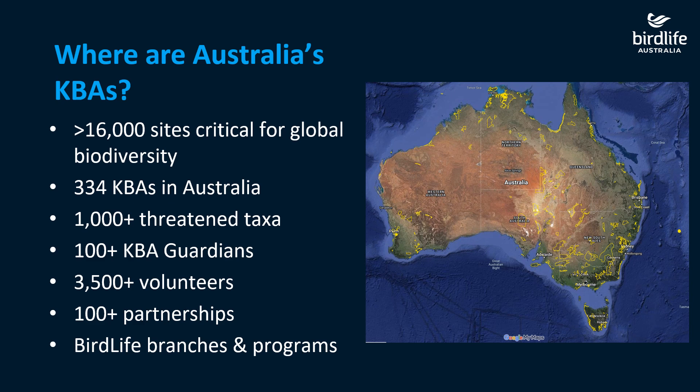The KBAs have had over 1,000 threatened taxa recorded across these 334 sites. We've got over 100 KBA guardians and over three and a half thousand volunteers. We also partner with various organisations — non-government organisations, governments, land managers and First Nations people, as well as our BirdLife branches and other programs.